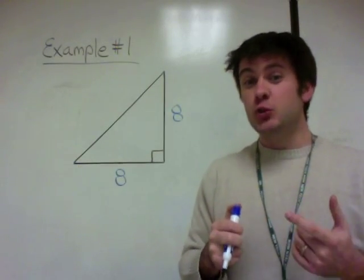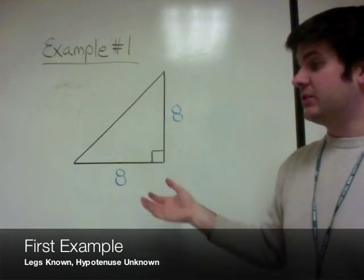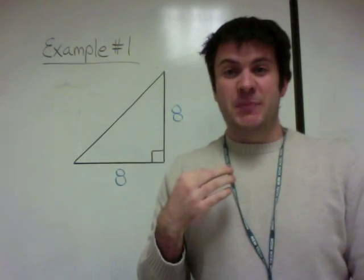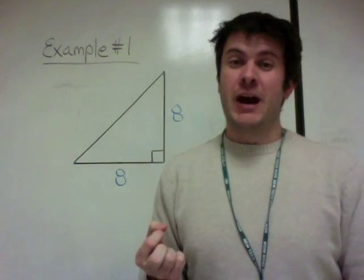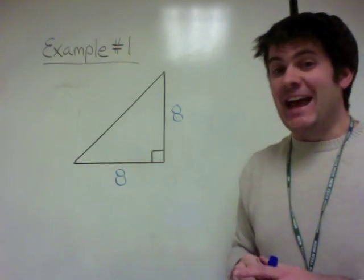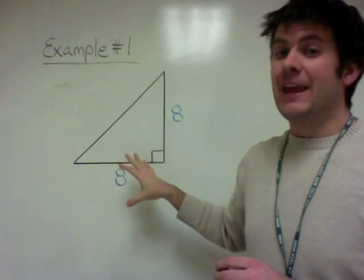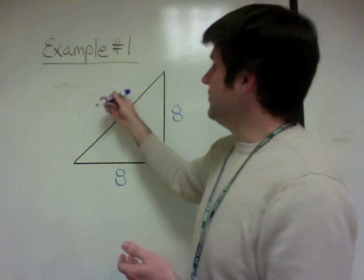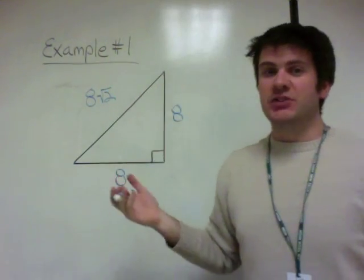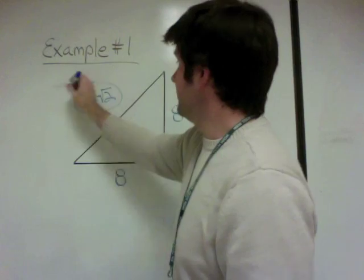For the first example of isosceles right triangles, we have a triangle where we know the lengths of the legs. You could use the Pythagorean theorem, but using the special properties of an isosceles right triangle, you can get the answer much faster. The hypotenuse is the square root of 2 times the length of the leg, so the hypotenuse is just 8 times the square root of 2 — written as 8 root 2.